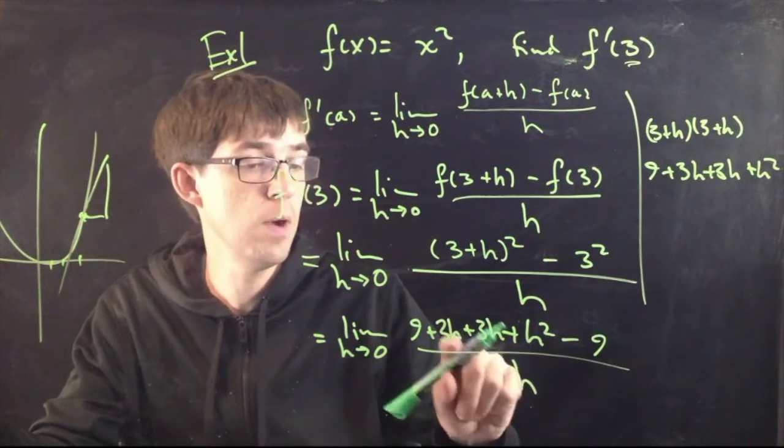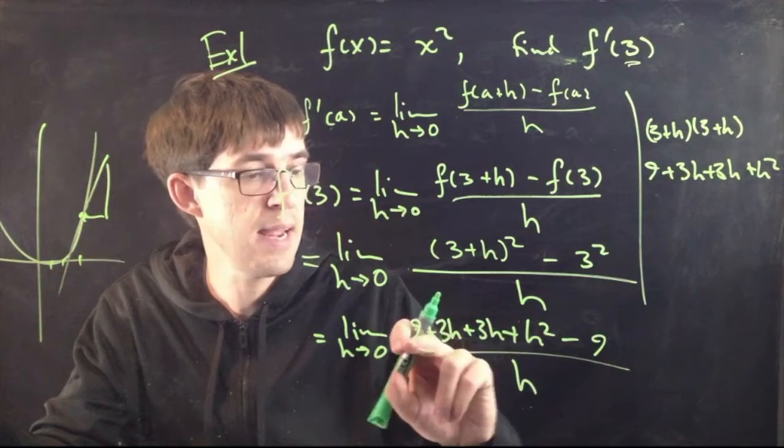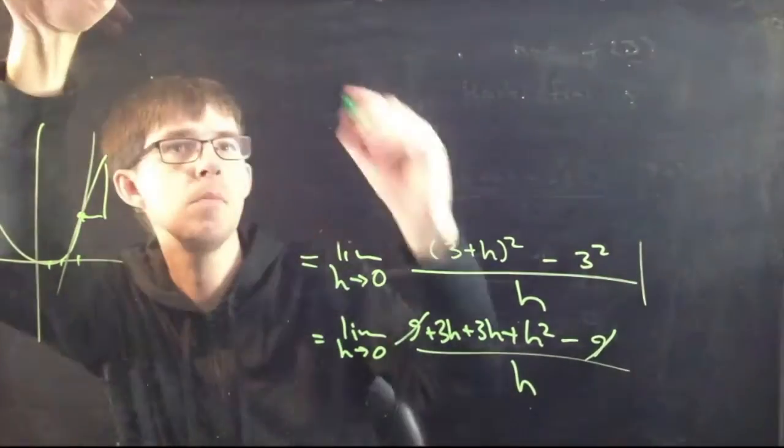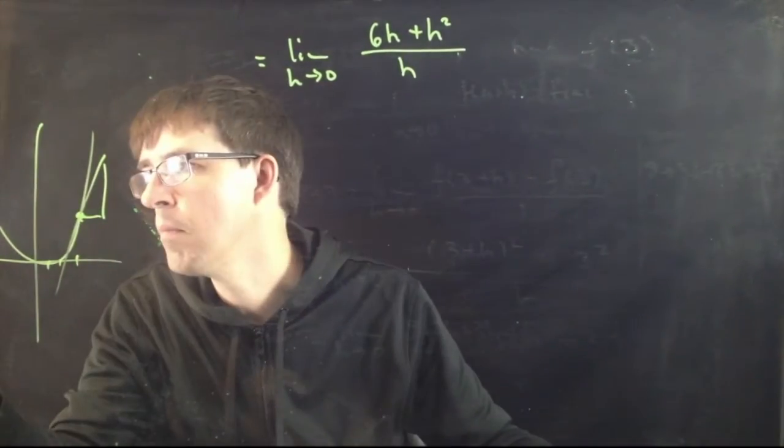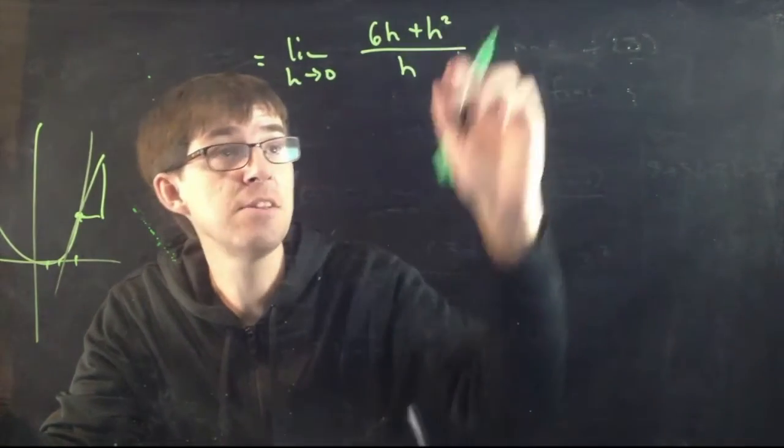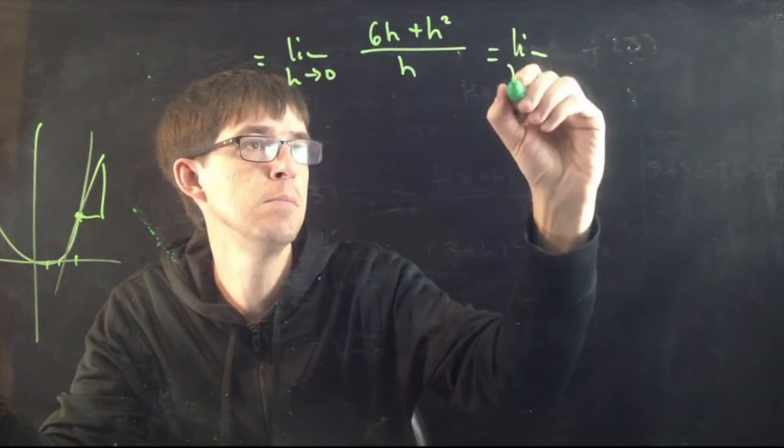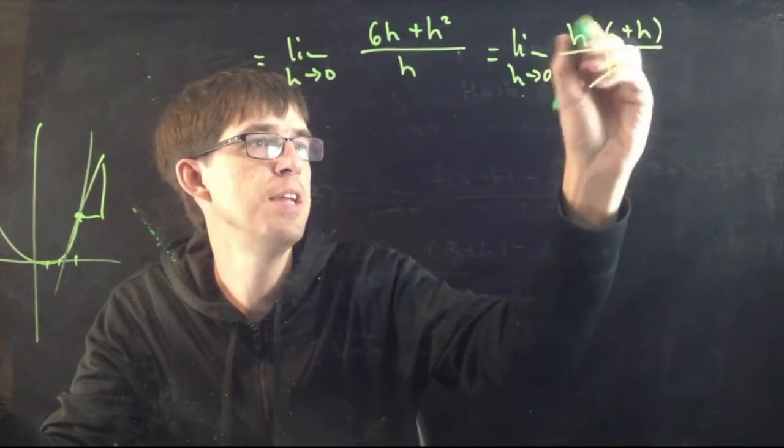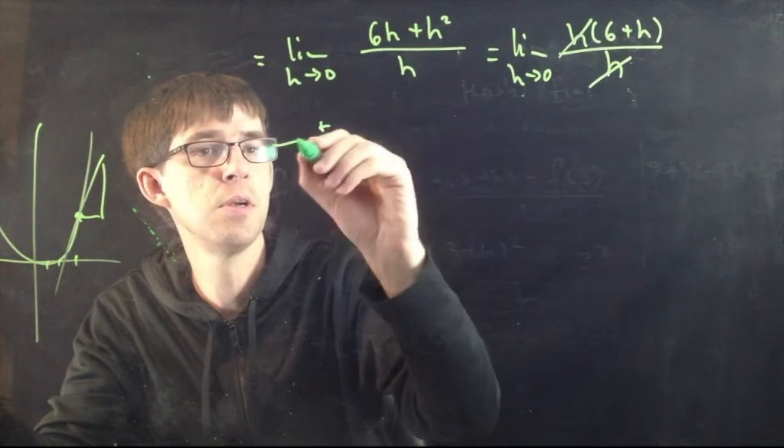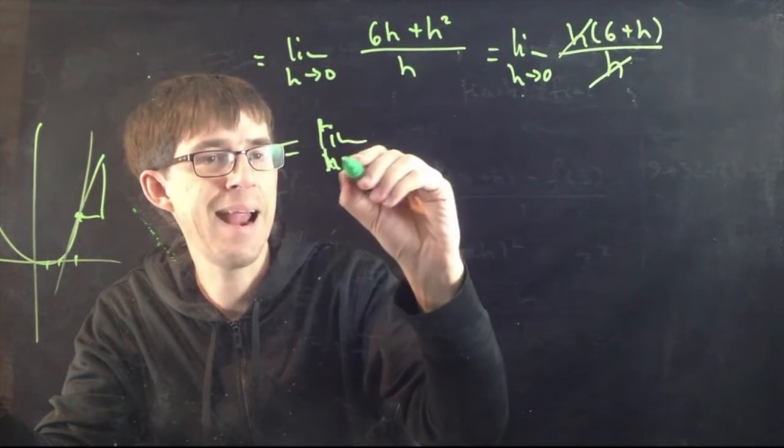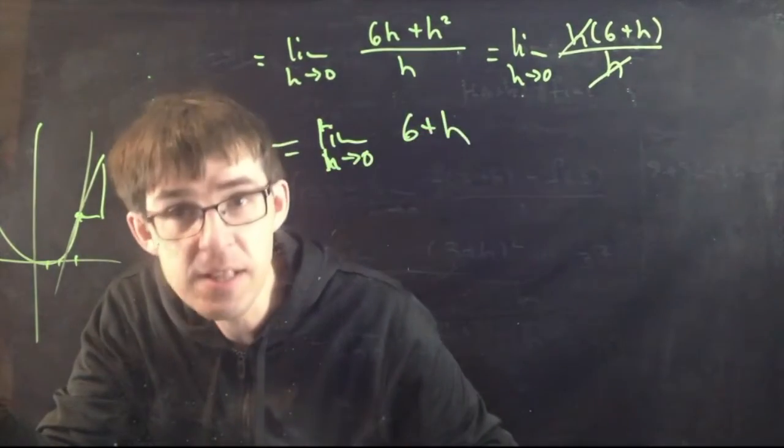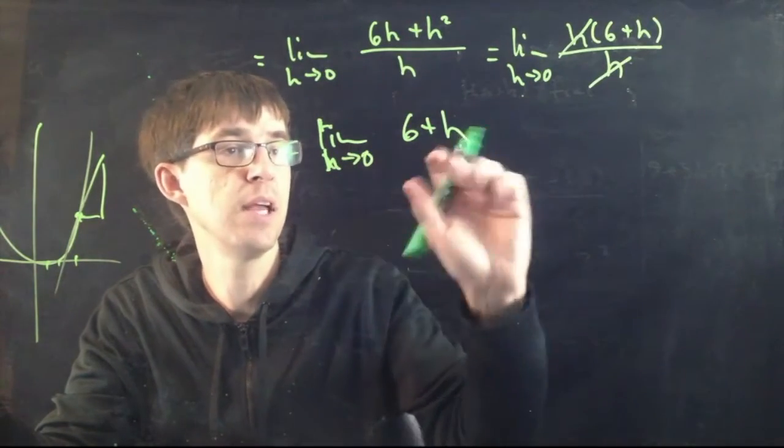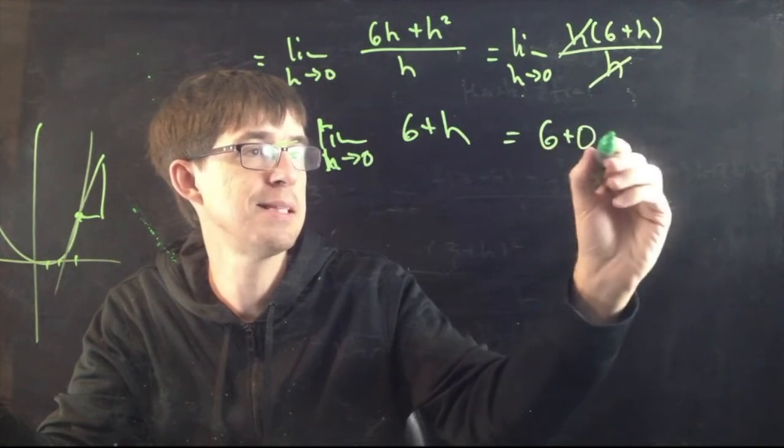So this becomes 9 plus 3h plus 3h plus h squared minus 9 divided by h. All right, can we simplify anything here? Well, these 3h's can add together. Give me 6h and the 9 will cancel. So those go away. These are going to add up to 6h. All right, what can we do now? It looks like we can factor h out on the top. So this is, then h goes to 0, h times 6 plus h divided by h. Them h's will cancel. We get 6 plus h. h goes to 0, 6 plus h. And finally, now, this is as simple as this is going to get. We can finally do the limit by plugging the value in for h. We plug h equals 0 over here. And we simply get 6.